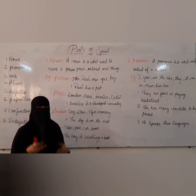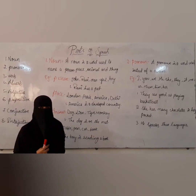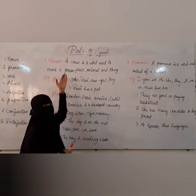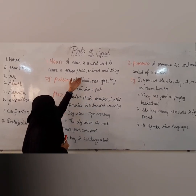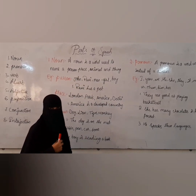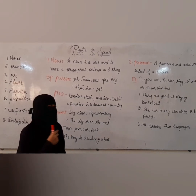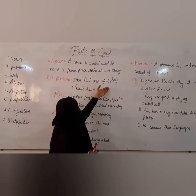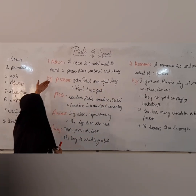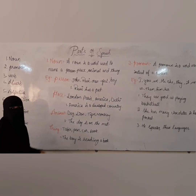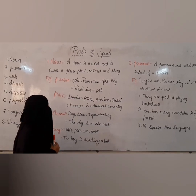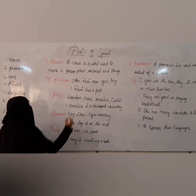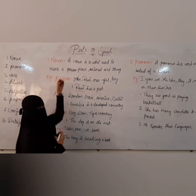That is noun. What is a noun? A noun is a word used to name a person, place, animal, and thing. Let's see some examples. John, Ravi, man, girl, boy — these are the examples of a person noun. Now let's see one more example: Ravi has a bed. In this example, Ravi is a person noun.